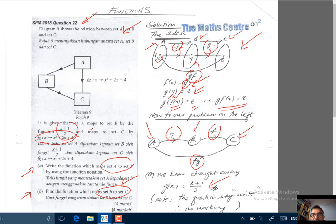Ini ialah idea dalam kita punya soalan, di mana kita ada 3 set A, B dengan C. Kalau kita ganti nilai X dalam F, kita dapat Y. Kalau kita ganti nilai Y dalam G, kita dapat Z.